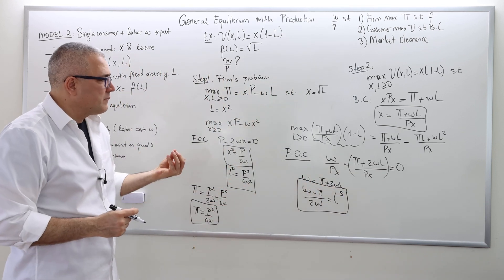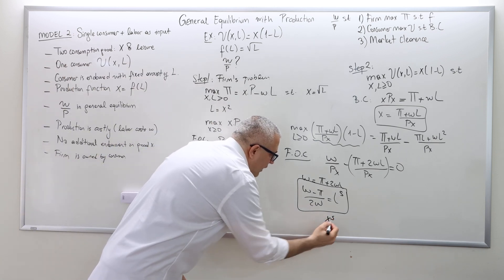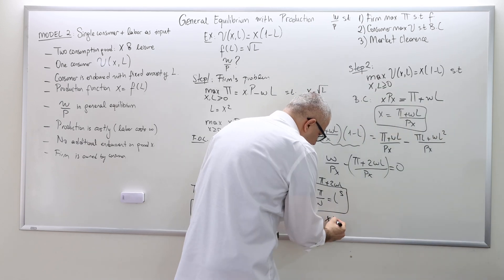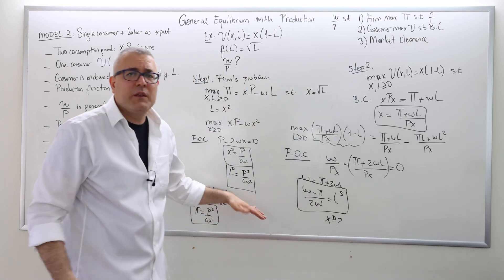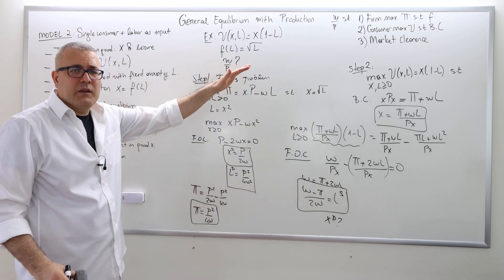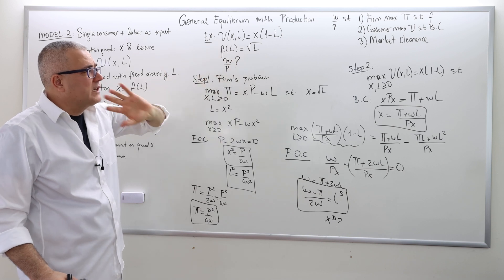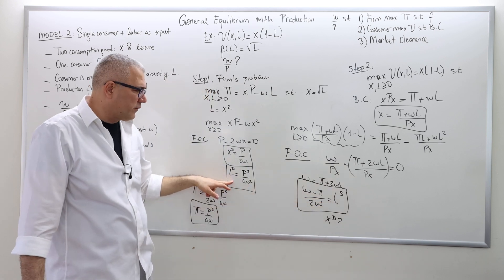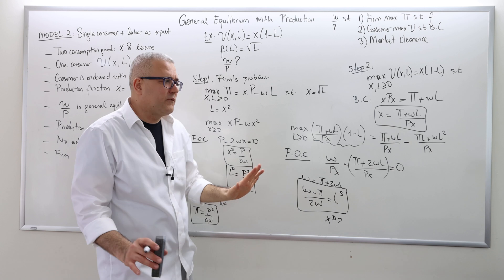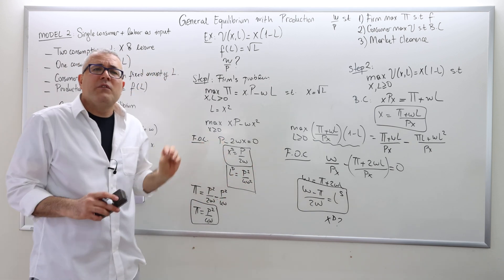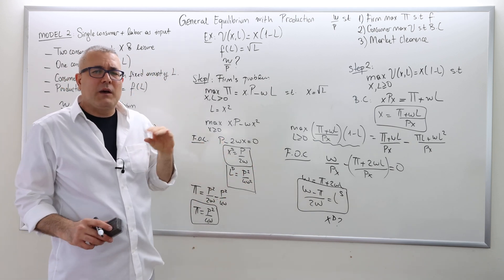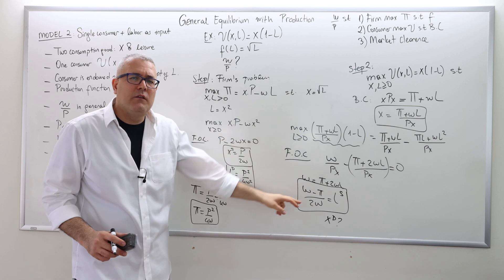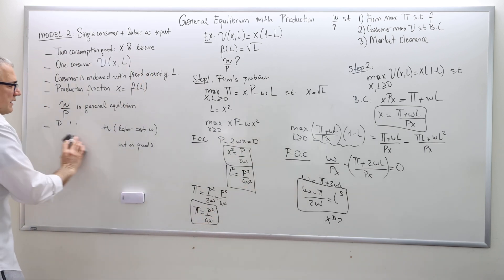This is the labor supply — how much labor the worker (consumer) will supply. I'm not going to find the demand for X, because I don't need it for step three. In step three, I'm going to clear the market for labor, because I know both the supply and demand for labor. From that, I'll find the P/W ratio, and that ratio will also clear the supply and demand for good X, so I'll skip computing the demand for X.